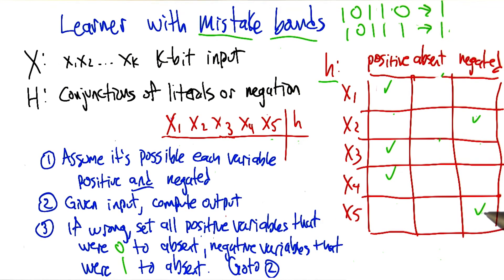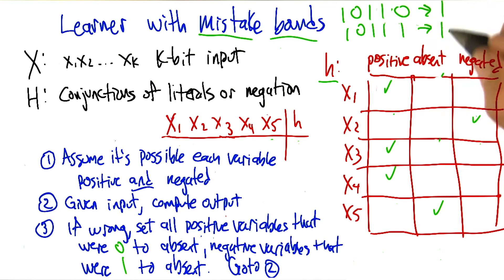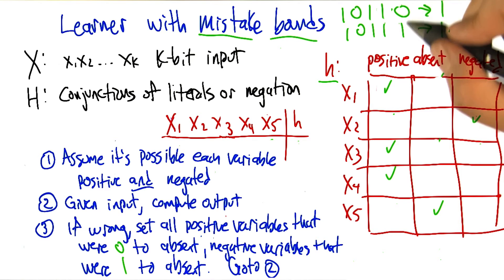All right, so then that was X5. X5 is there in its negated form, but it's actually a 1 in the input. So we're going to turn that away to absent. All right? Mm-hm. So, and that's the same thing that you did when we were looking at the problem before. You said, if you have two answers where the answer, two inputs where the output is both true,